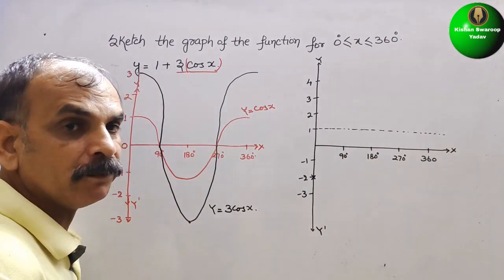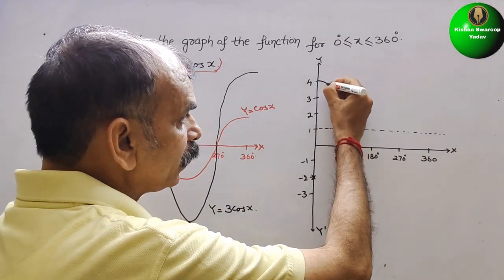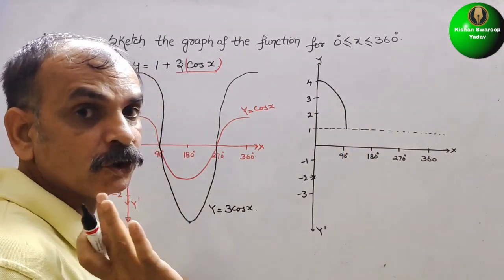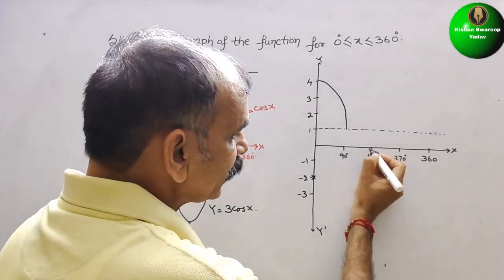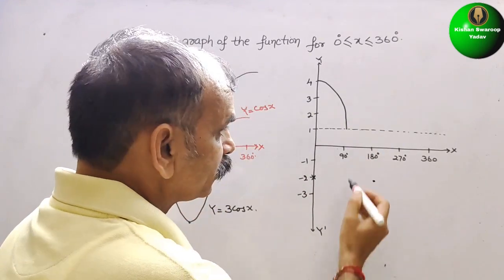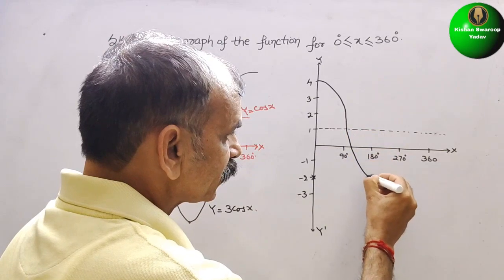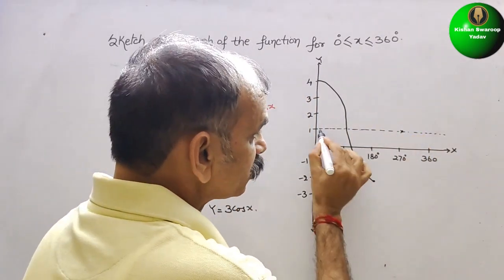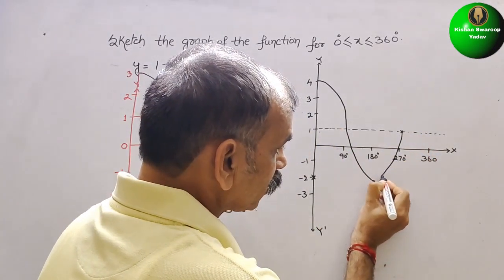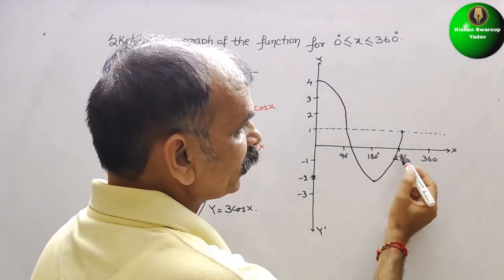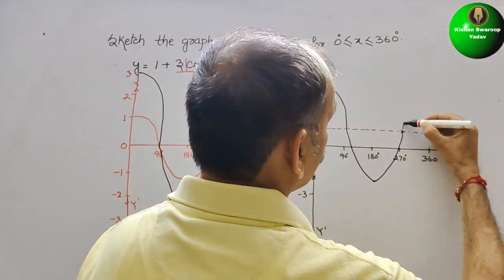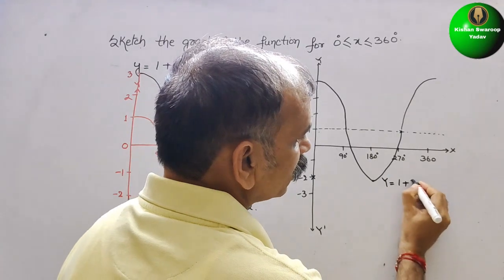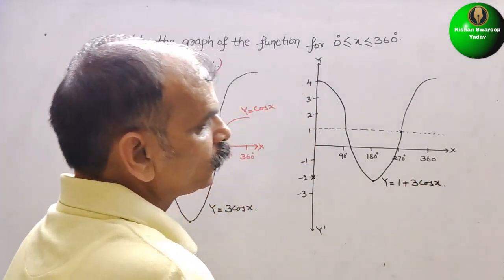The final graph starts at 4 at 0°, comes down to the baseline (1) at 90°, reaches -2 at 180°, goes back to the baseline (1) at 270°, and returns to 4 at 360°. This graph is y = 1 + 3cos x.